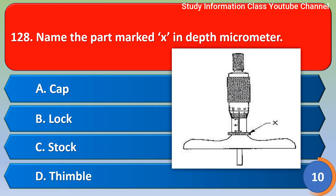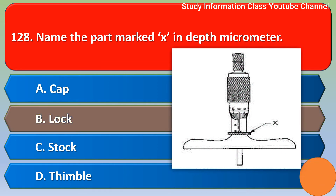Next question: Name the part marked X in the depth micrometer. Option A: cap, Option B: lock, Option C: stock, Option D: thimble. The correct answer is Option B — lock.